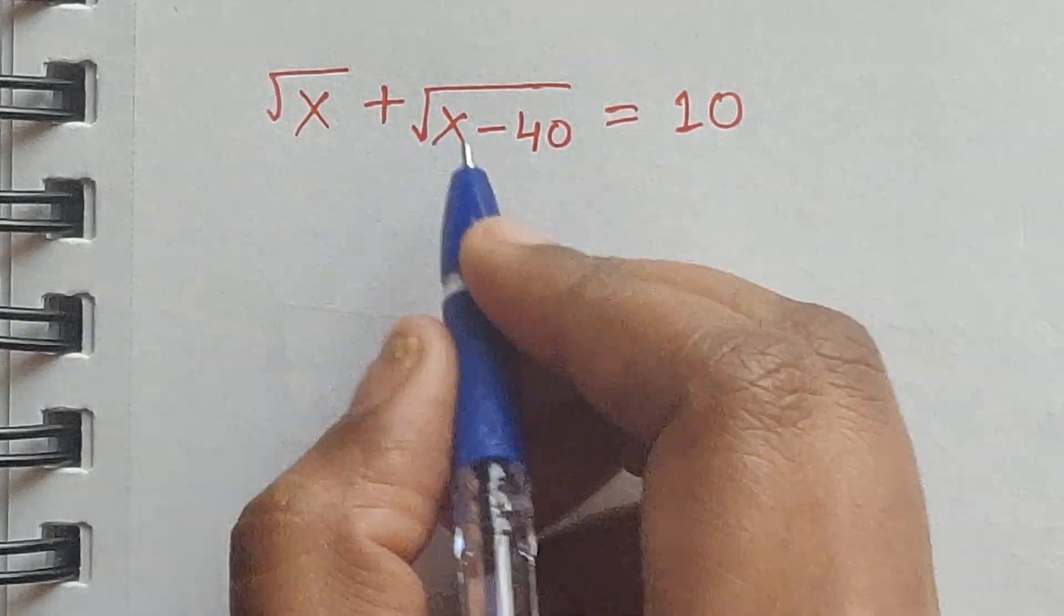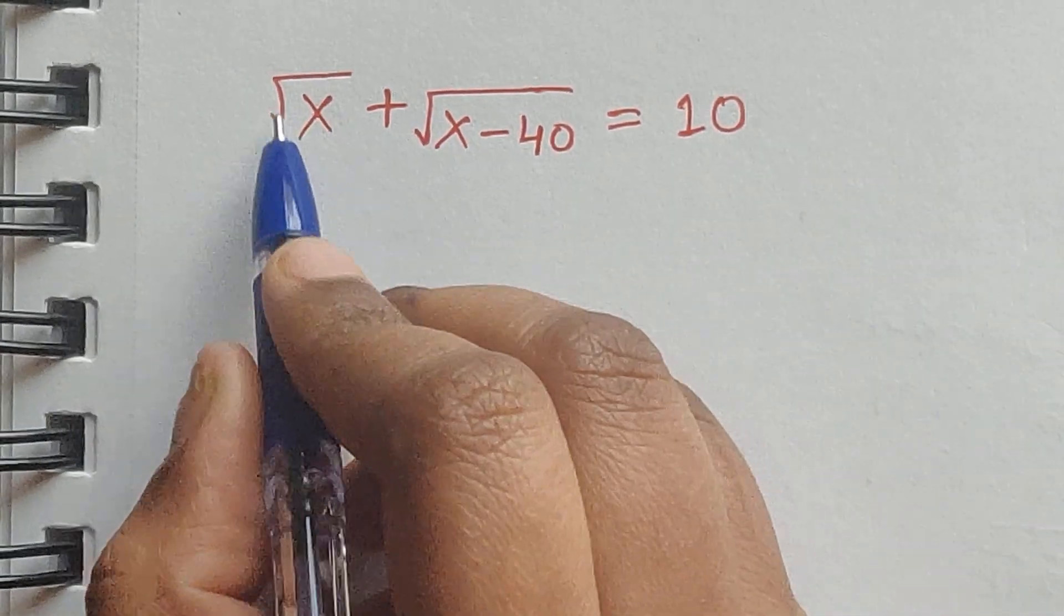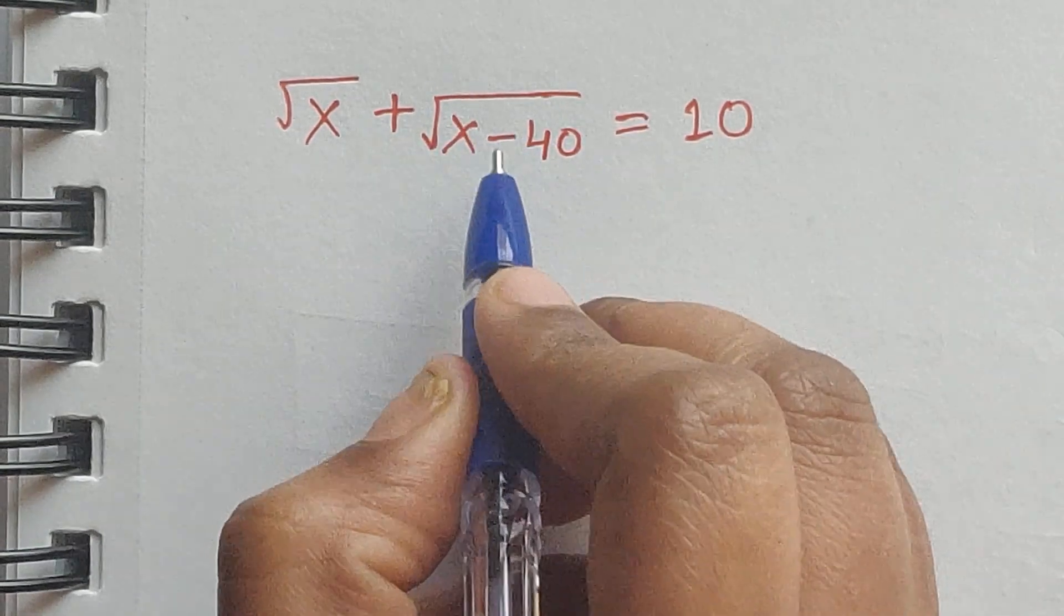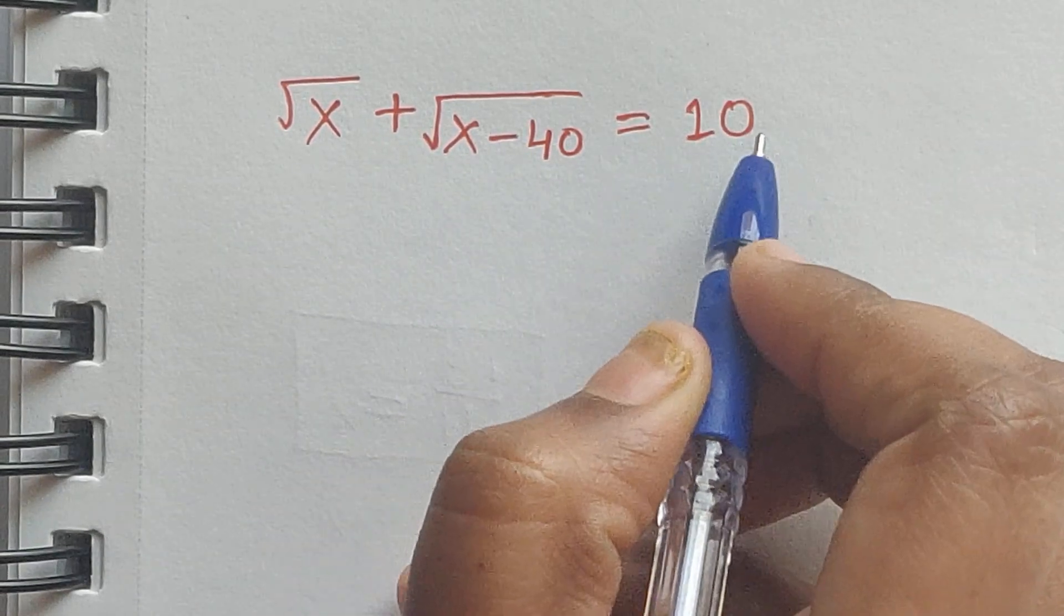Hello everyone, welcome back to our channel. Here we have one problem: square root of x plus square root of x minus 40 equal to 10.